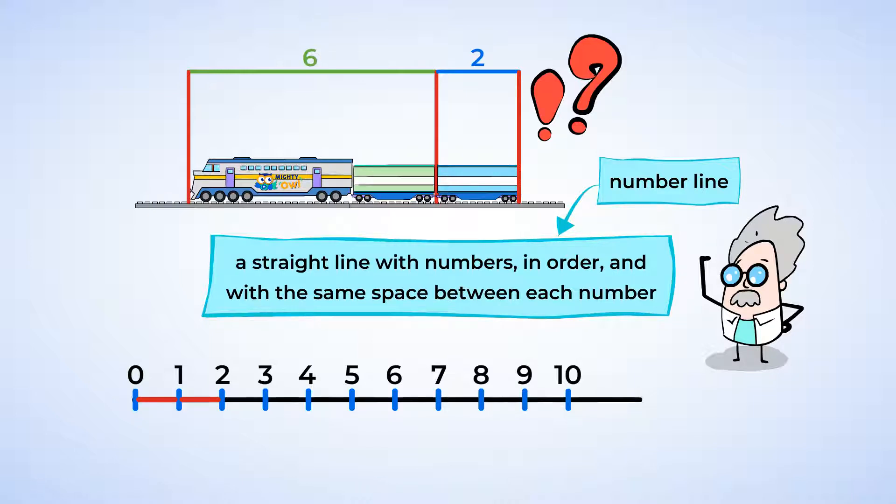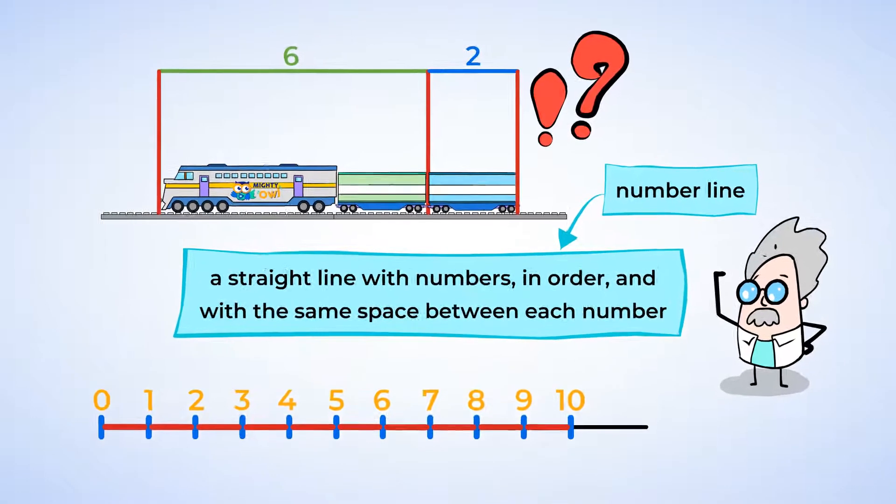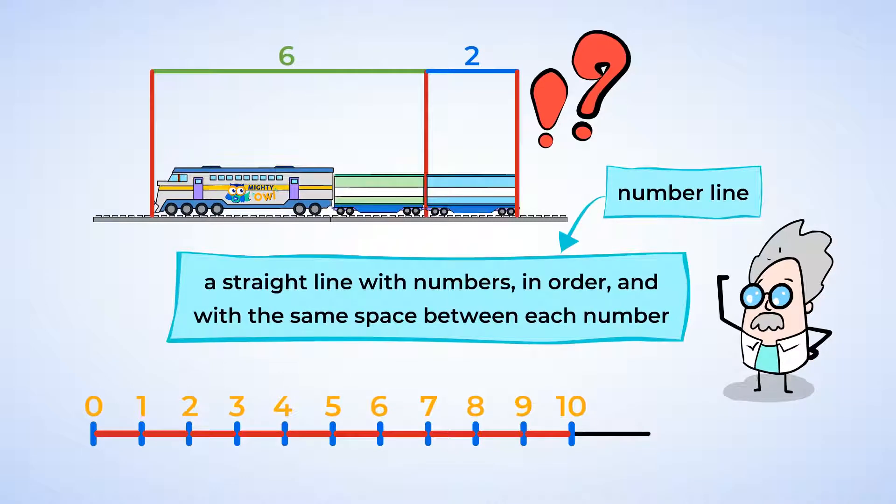It has all the important parts: a straight line, numbers in order, and equal spaces between each number mark. Now if we go back to our train problem, you can see how using a number line is just like solving it on a measuring tool.